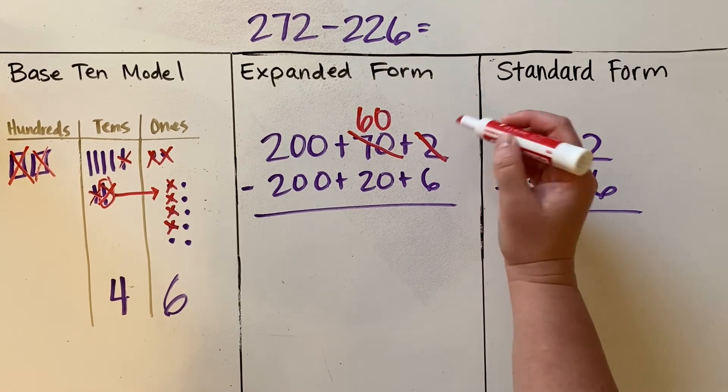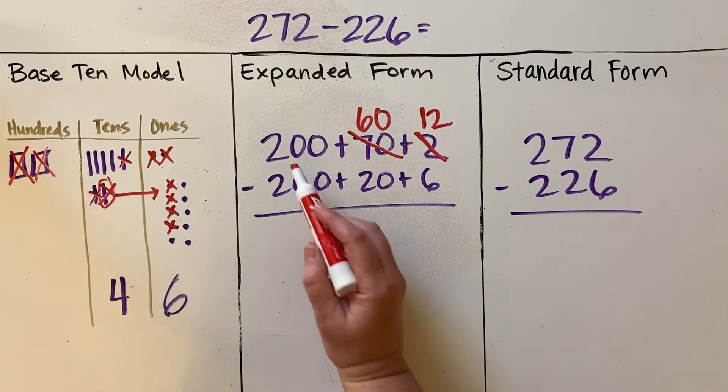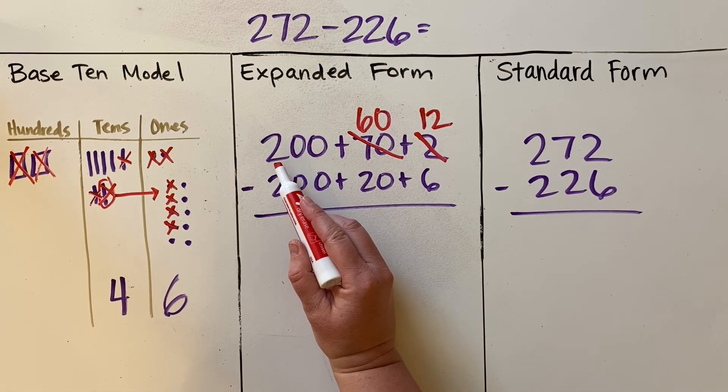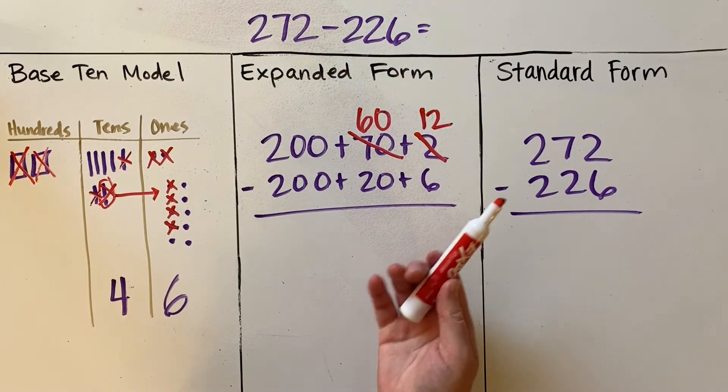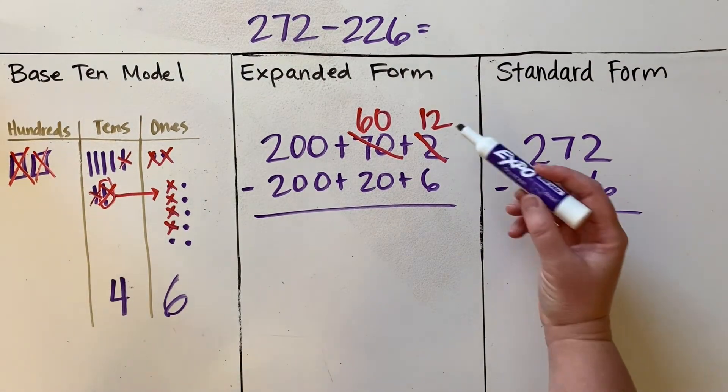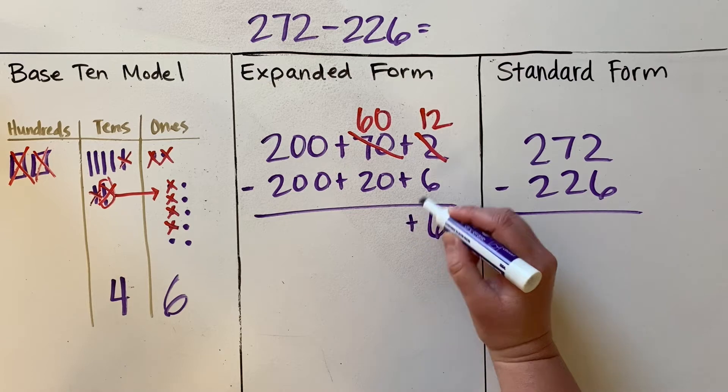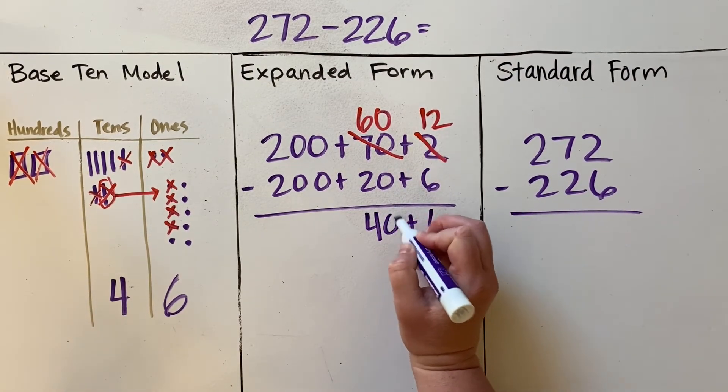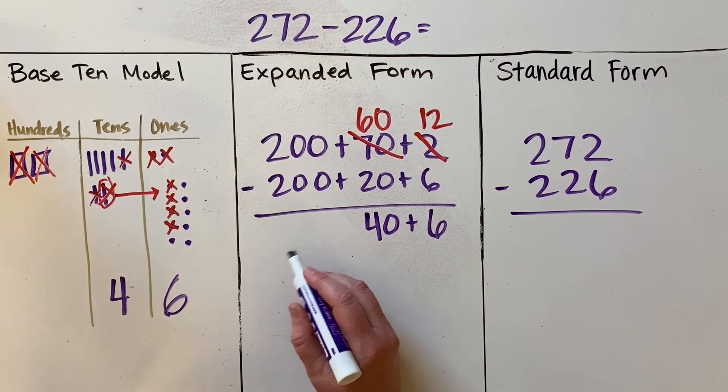Now the number we're taking away from is 200 plus 60 plus 12, which still equals 272. Now we can go through the process and do 12 minus 6, and that equals 6. 60 minus 20 is 40, and then 200 minus 200 is 0, so we don't need to write anything there. So 40 plus 6 equals 46.